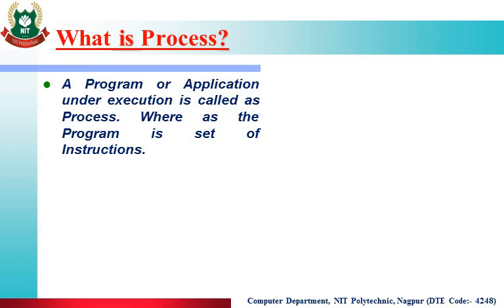If you have an application software installed on your desktop, that is your program. But when you execute that program, the set of instructions written inside it execute one by one, and when they execute, that program is no longer a program — it becomes a process. That means when the program is in execution, it is called a process.